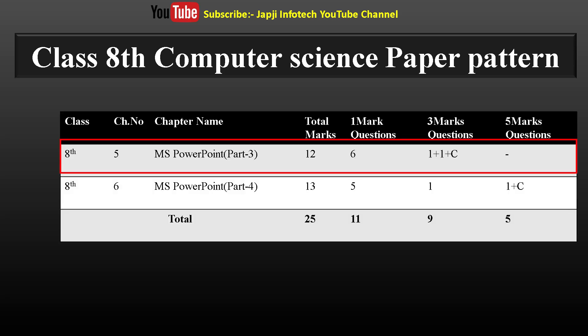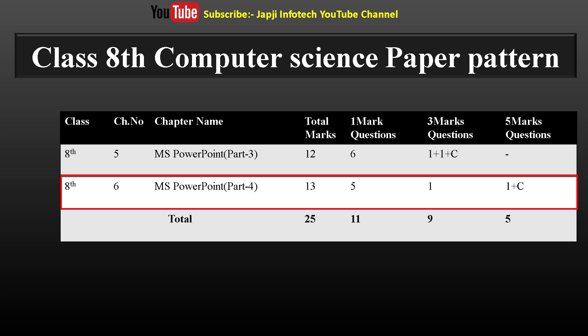First of all, let's take a look at the paper pattern of Class 8 subject Computer Science. A paper of total 12 marks will come from Lesson 5 MS PowerPoint Part 3, which will have 6 questions of 1 mark, 3 questions of 3 marks with 1 choice question, and no question of 5 marks from this lesson. Similarly, a paper of 13 marks will come from Lesson 6 MS PowerPoint Part 4, in which there are 5 questions of 1 mark, 1 question of 3 marks, and 2 questions of 5 marks out of which one question will be asked.